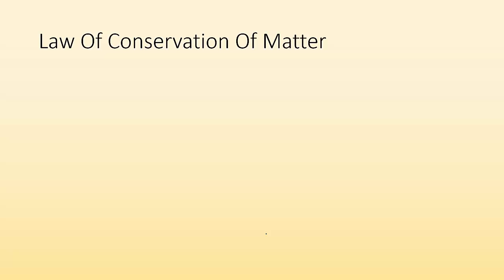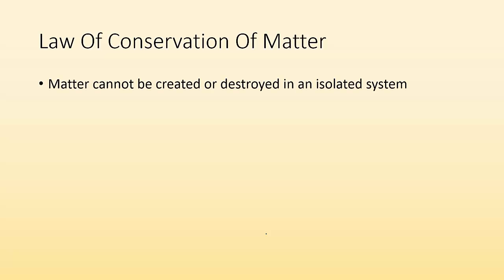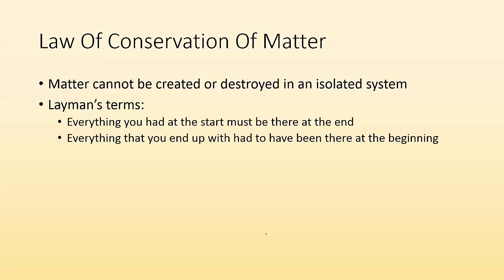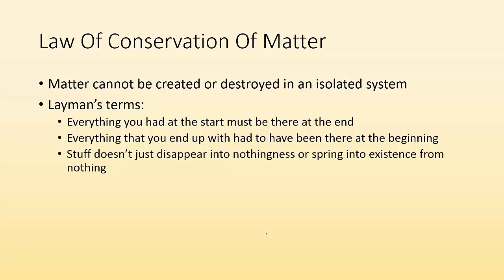So, what is the law of conservation of matter? It's simply saying that matter cannot be created or destroyed in an isolated system. In layman's terms, it just means everything that you had at the start must be there at the end, and everything that you end up with had to have been there at the beginning. Stuff doesn't just disappear into nothingness or spring into existence from nothing.